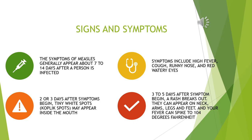Signs and Symptoms. The symptoms of measles generally appear about 7 to 14 days after a person is infected. Symptoms include high fever, cough, runny nose, and red, watery eyes. Two or three days after symptoms begin, tiny white spots may appear inside the mouth.